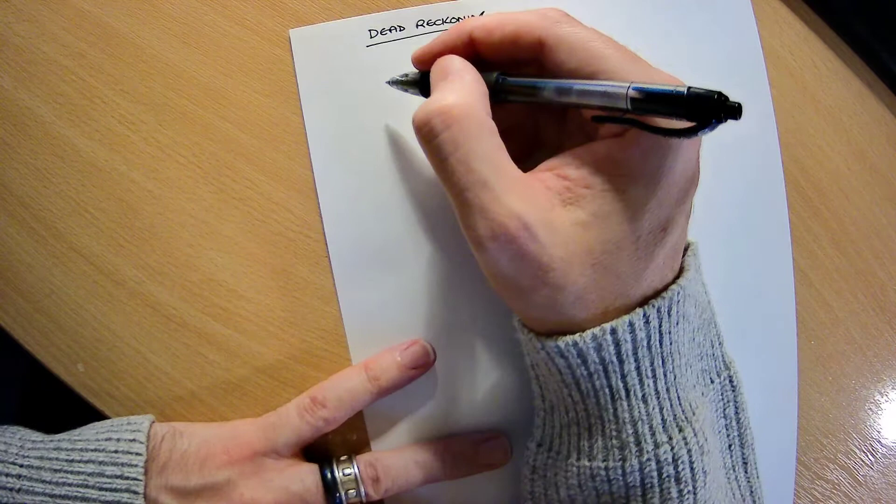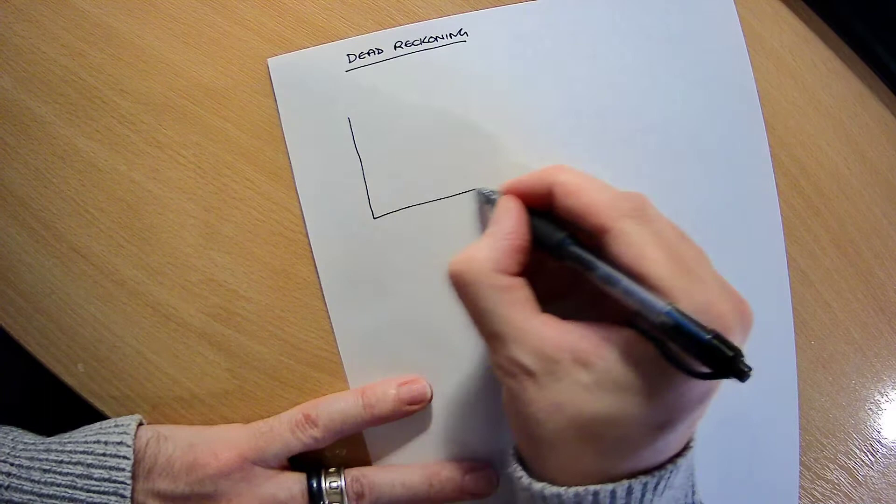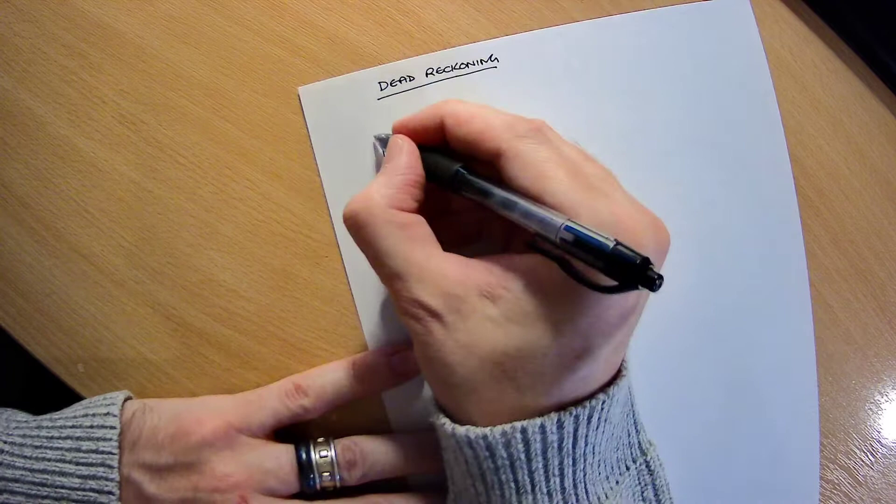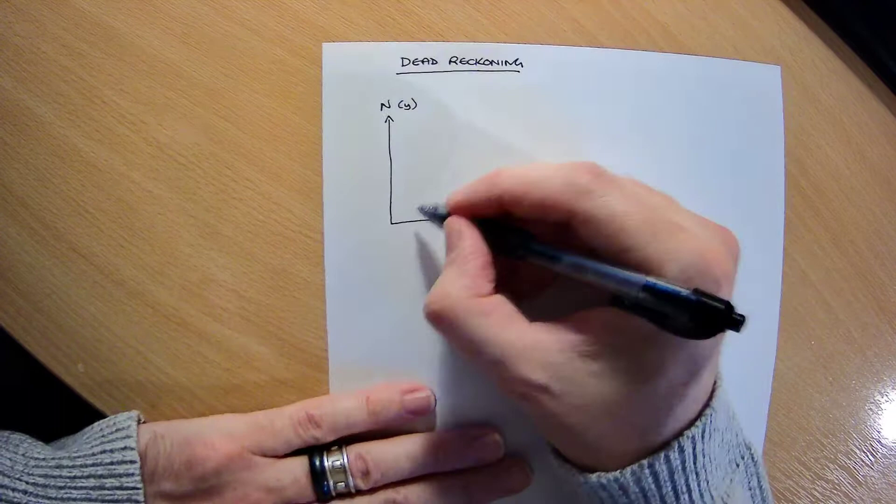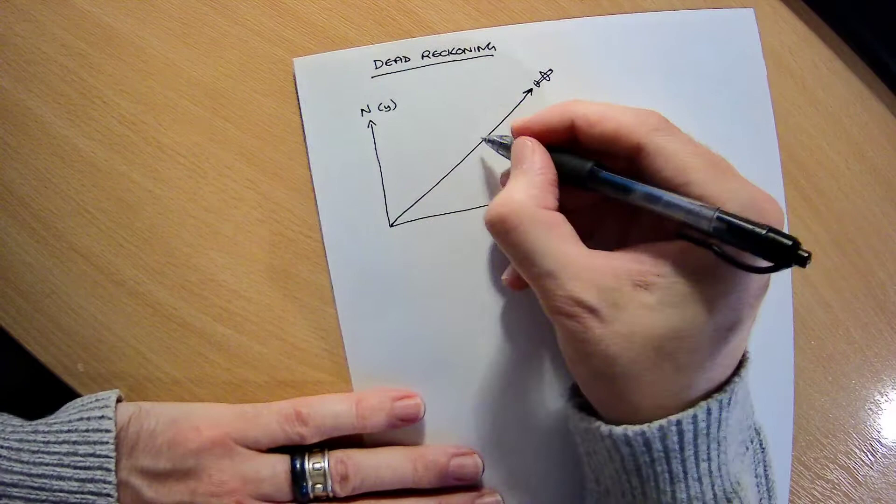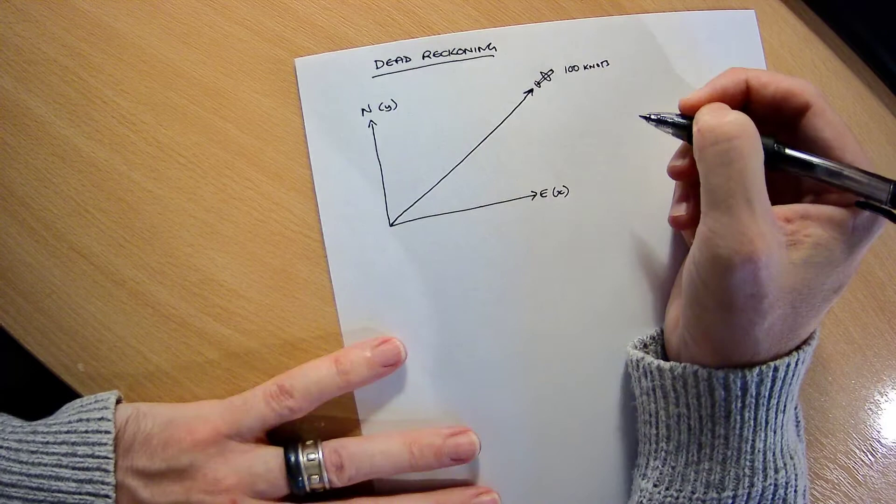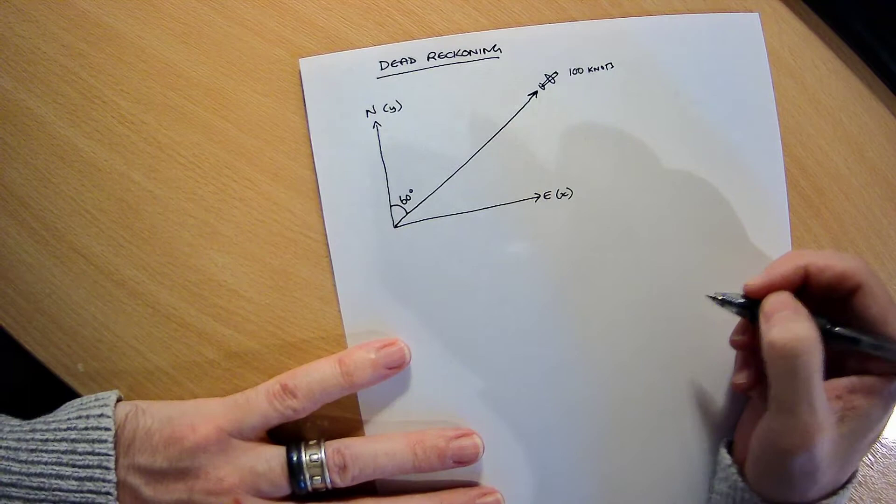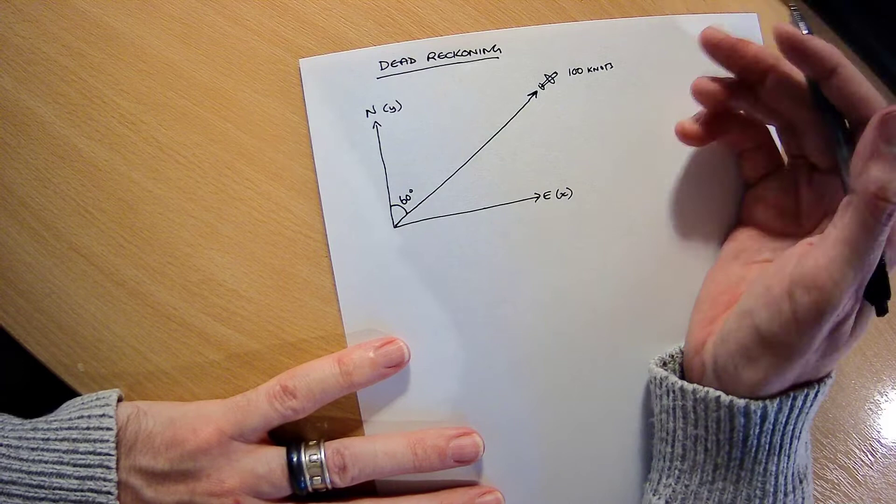So if you imagine you've got your aeroplane on a map, and we'll draw the axes of the map. So we've got east, which is the x-axis, and you've got north, which is the y-axis. And we've got an aeroplane. And say we have a track flying at 60 degrees. So there's our little aeroplane. And we're doing 100 knots, and this is 60 degrees from north, remember. So, knots means nautical miles per hour. So if we do all of our calculations based on one hour, it'll make it nice and simple.